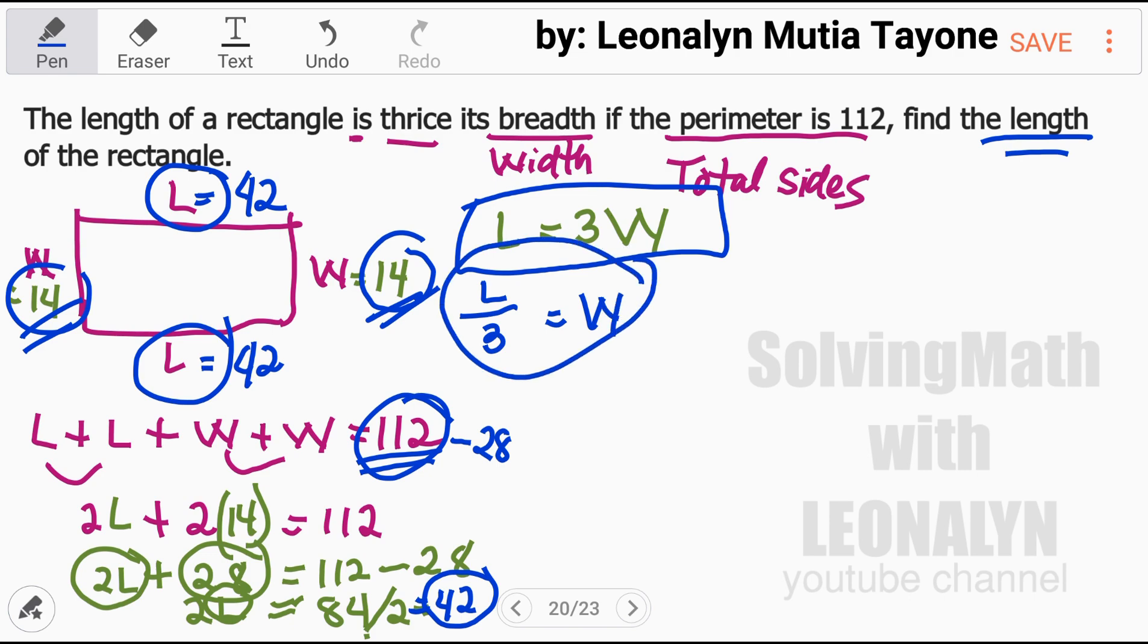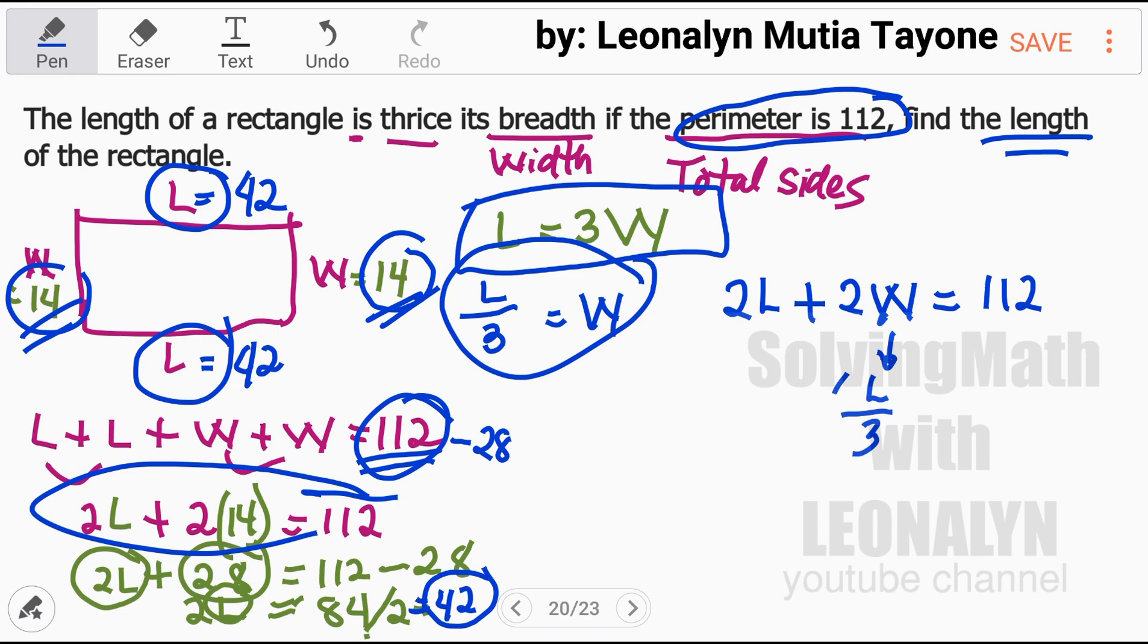So L over 3 equals W. We'll use this. Let's go back to this, the 2L plus 2W equals 112.